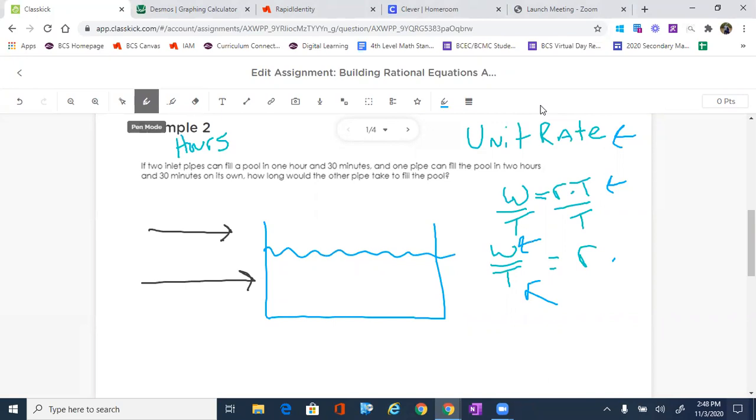So the one thing we do need to pay attention to is that it says one hour and 30 minutes. So we are dealing with two types of time, so that means we're going to have to convert to make sure that we pay attention to only one value of time. So one hour and 30 minutes is 1.5 hours, and then the other one says two hours and 30 minutes, which is 2.5 hours.